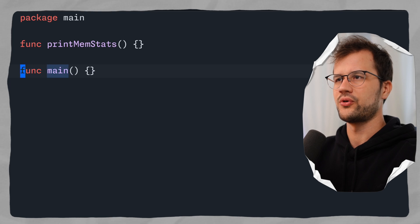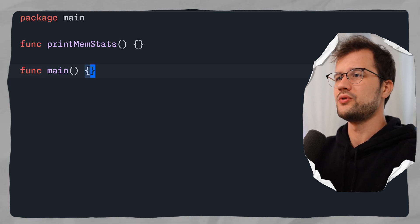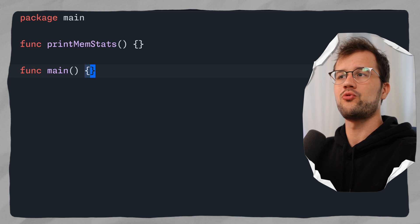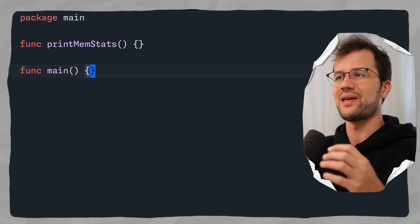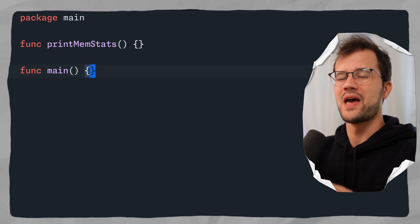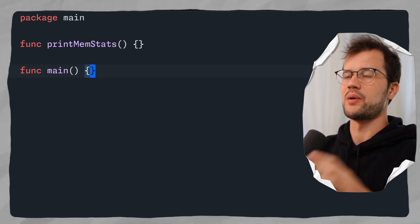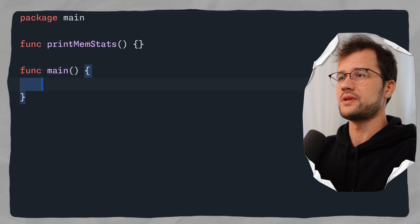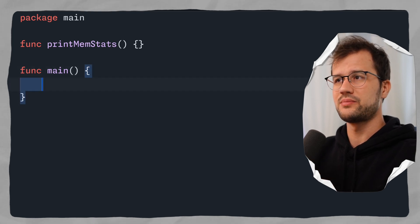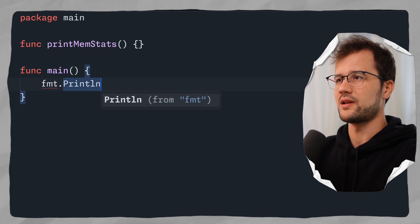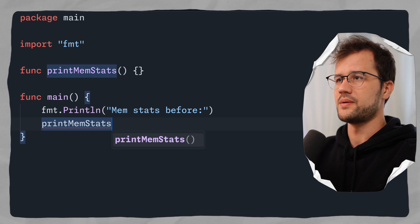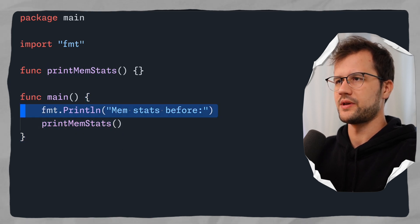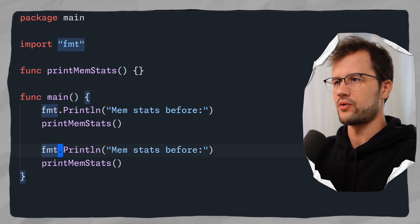Let's focus on the main functionality. We want to print the memory statistics before a huge allocation happens in memory, and then also print the memory statistics after that large allocation has occurred. So we add a simple print line statement saying 'memstats before', call printMemStats, then copy those two lines and paste them below saying 'memstats after'.